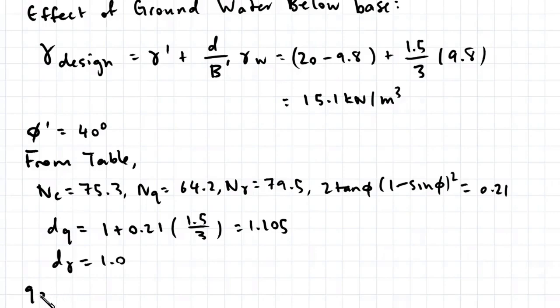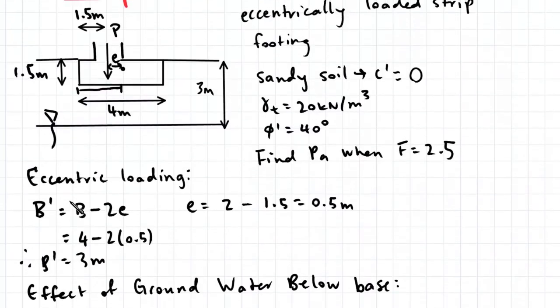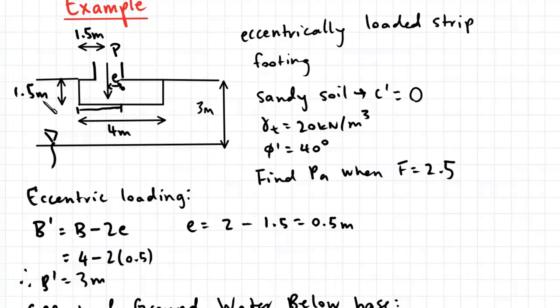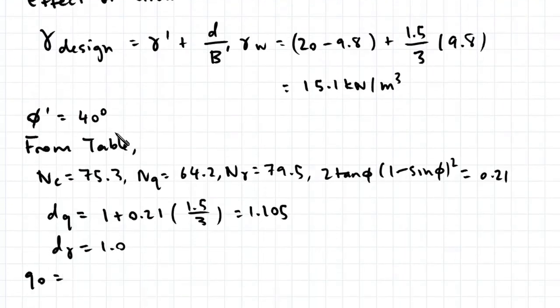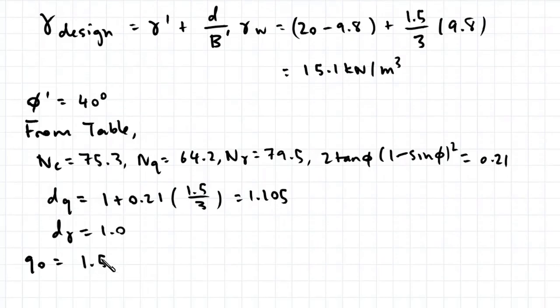Let's find our pressure which acts at the base of the footing, q0. So that's just 1.5 multiplied by 20. And we use the total unit weight here because this part of soil is above our water table. So 1.5 multiplied by 20, that gives us 30 kPa.